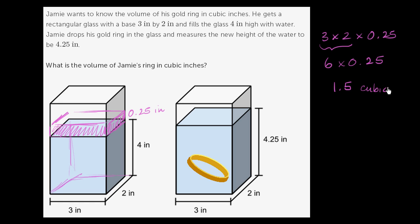1.5 cubic inches is the volume of Jamie's ring, which is actually a pretty sizable volume for a gold ring. Maybe he has a very big finger, or whoever bought him the ring likes to spend a lot on gold.